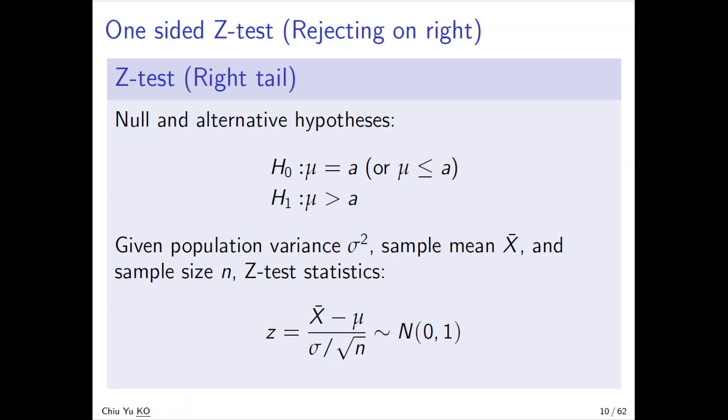First, we talk about the one-sided test as a right-tail test. The null hypothesis is H₀: μ = a or μ ≤ a, and the alternative hypothesis—that's most important—is H₁: μ > a. This is very important: the alternative is μ > a.